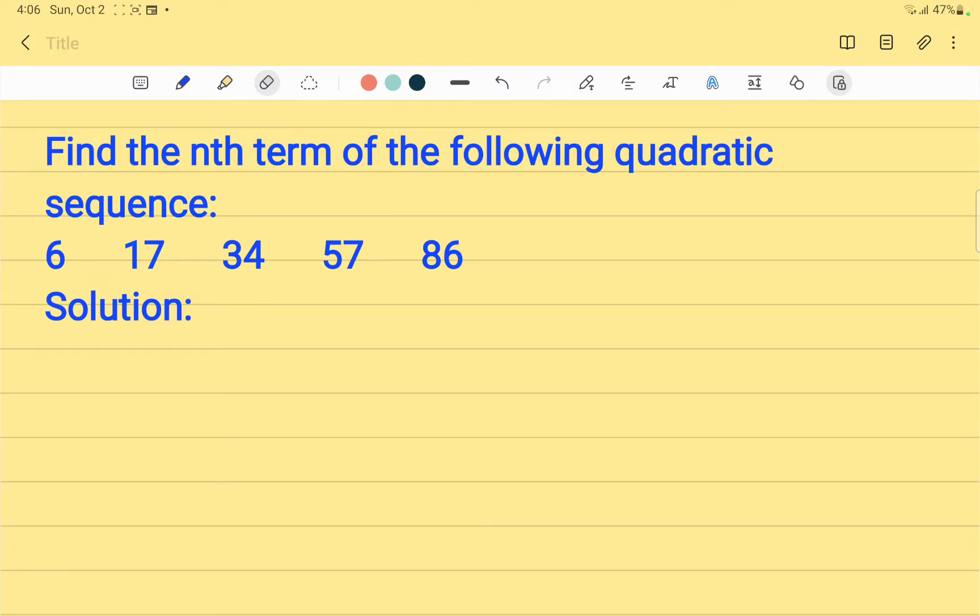Our given sequence in this case is 6, 17, 34, 57, and 86. Let us find the differences of the sequence.